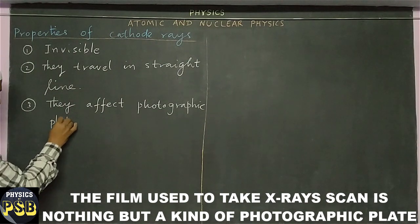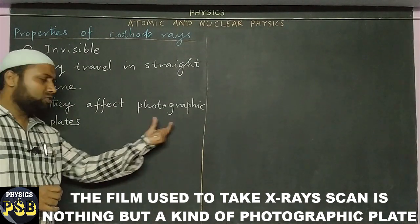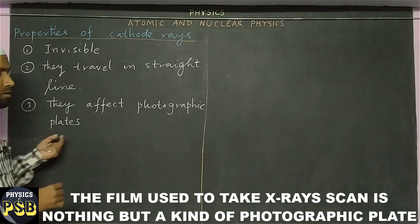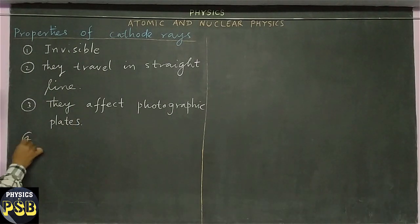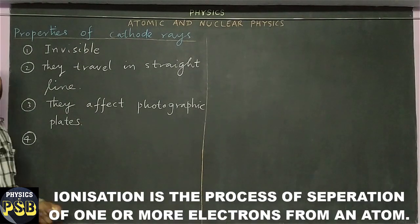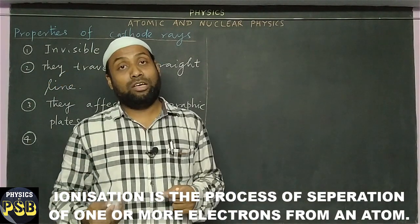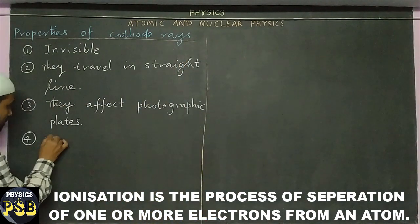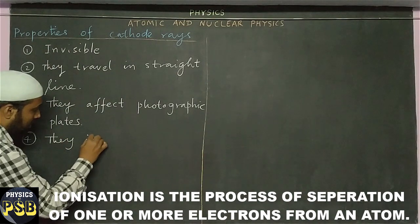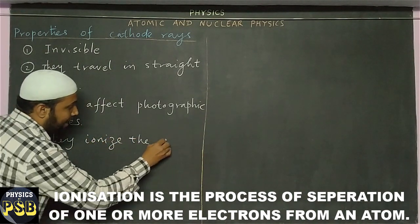Photographic plates are used in photography. Fourth: when cathode rays are made to pass through gas, they ionize it — they separate electrons from an atom and turn it into ions.